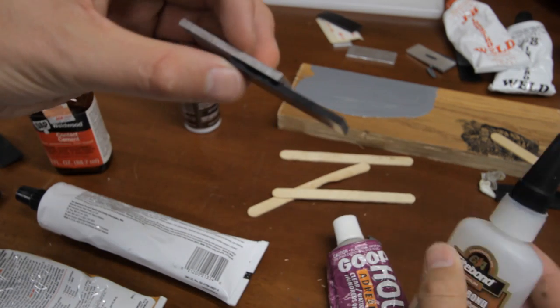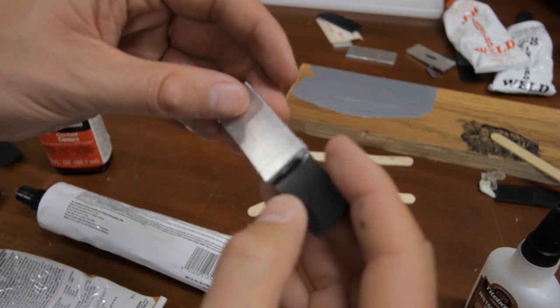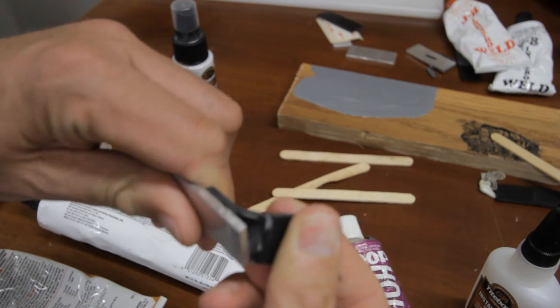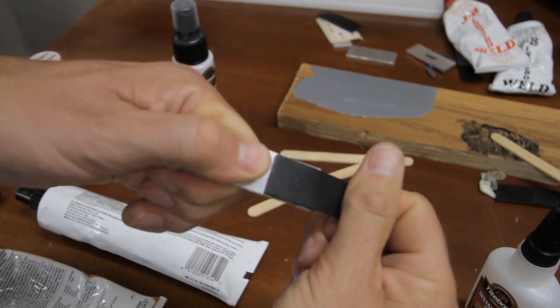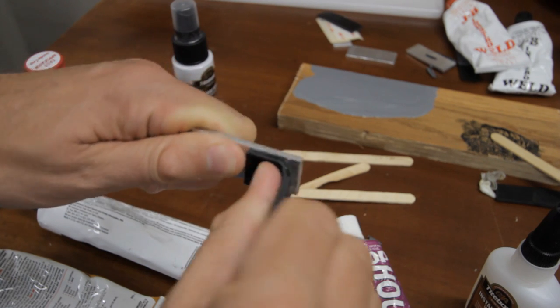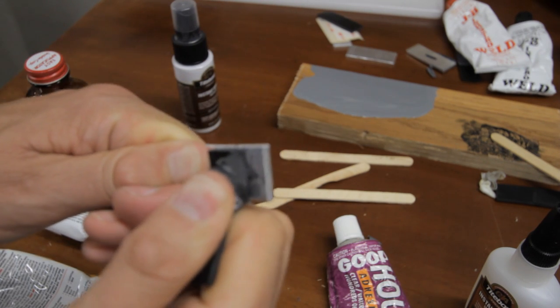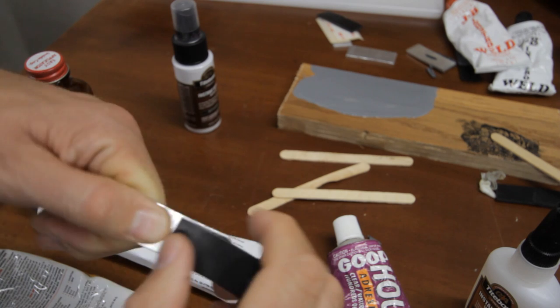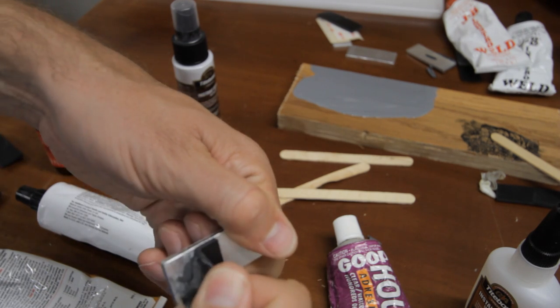I love CA glue for woodworking and whenever I need a super strong bond, but I have my doubts as to how well it will hold up with rubber over time. Wow, it grips the rubber so well that it shredded when I tried to pull it apart.